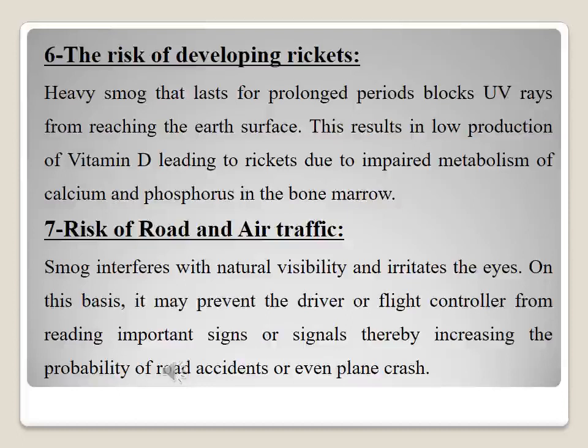The sixth consequence is the risk of developing rickets. Heavy smog that lasts for prolonged periods blocks UV rays from reaching the Earth's surface, resulting in low production of vitamin D and leading to rickets due to impaired metabolism of calcium and phosphorus in the bone marrow.